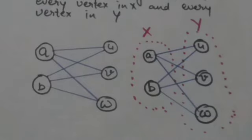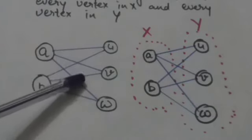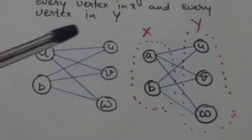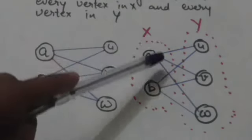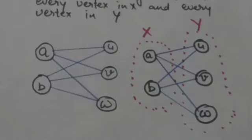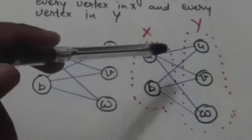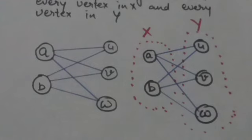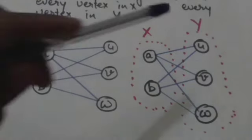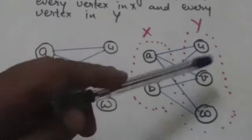For example, see this bipartite graph whose vertices are partitioned into two sets X and Y. There are two vertices in set X, that is vertex A and vertex B, and there are three vertices in set Y, that is U, V, and W.